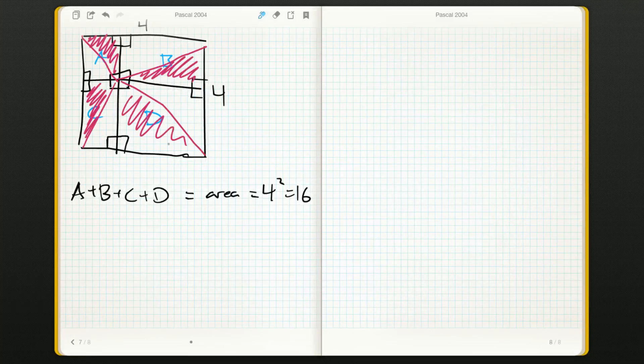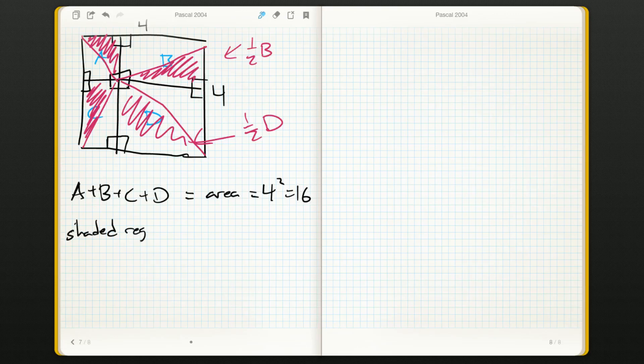So each of these is really, this one here is half of D, half of B, and so on. So the sum of the triangles, each of the triangles, we have a half A for the top left triangle, then a half B, and a half C, and a half D.